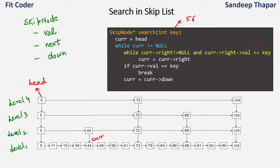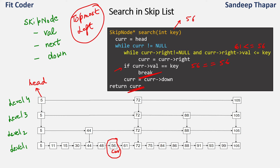Now at level 1, we compare right of 44 which is 48 with 56 — true, so current moves to 48. Then current right is 56, which is less than or equal to 56, so current moves to 56. Current right is 61, which is not less than or equal to 56, so we exit the loop. We check if current's value equals key 56 — true. We break out and return the pointer to current. We've found node 56. This shows how in a skip list we start from the topmost left node and skip nodes on the way down to level 1.